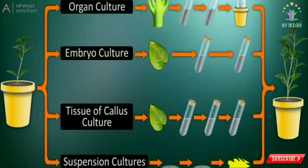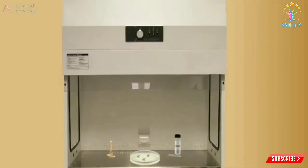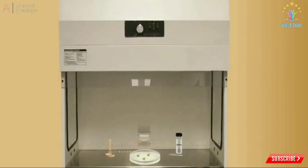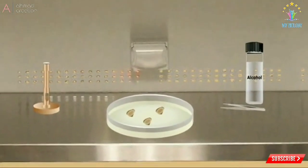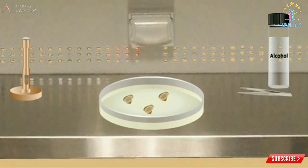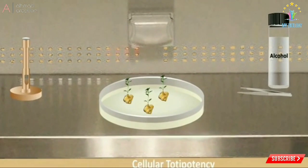Production of a large number of plants by tissue culture is called micropropagation. It is possible due to the ability of somatic cells of a plant to produce a new complete plant, called cellular totipotency.